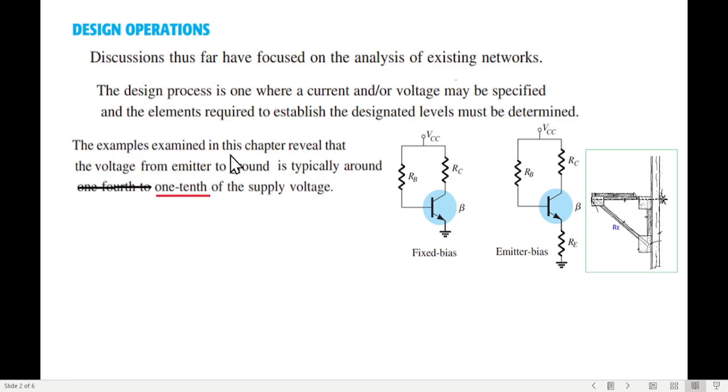There's a rule of thumb that says the examples examined in this chapter revealed that the voltage from emitter to ground, VE, is typically around one-fourth to one-tenth of the supply voltage. This is a given range, but most used is one-tenth of the supply voltage. That means we can write that VE is one-tenth of VCC. This was the main doubt the student had - why we are taking one-tenth. I hope this is clear from here. Now let's solve the question.